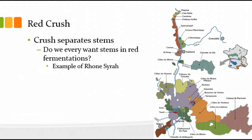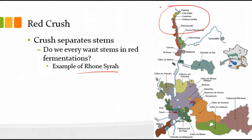Occasionally winemakers will add stems back to the red crush. Stems impart some more phenolics and flavors to the red wine. Northern Rhone Syrahs, for example, have historically been fermented in contact with some of the stems — particularly at Côte-Rôtie — and it gives some of that smoky character to Northern Rhone Syrahs.